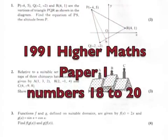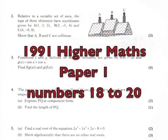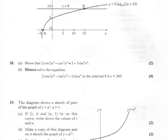And so the final part of the 1991 paper 1, numbers 18 to 20. So first number 18. So again, pause, do the question, and then check against the video.